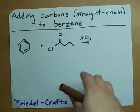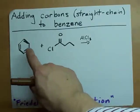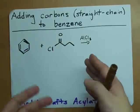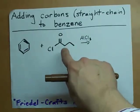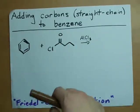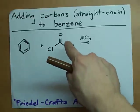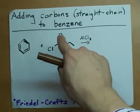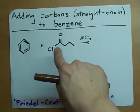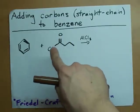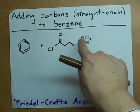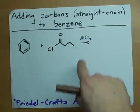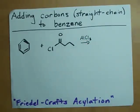What you need is a benzene, obviously. You need what's called an acyl chloride, which is basically an aldehyde but with a chlorine instead of the H on the end. And you need aluminum chloride as a catalyst.